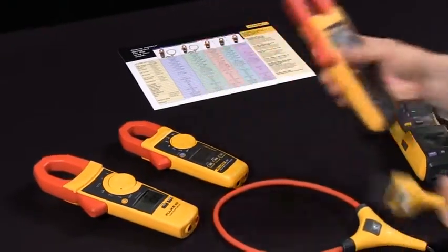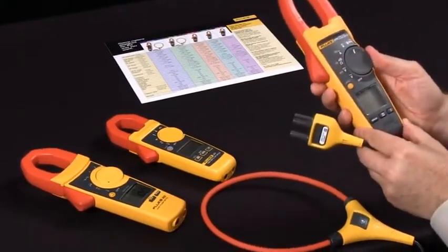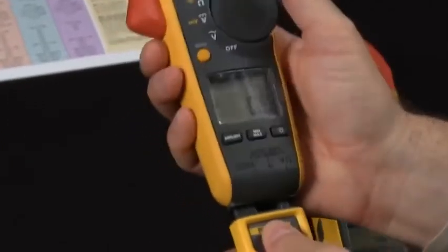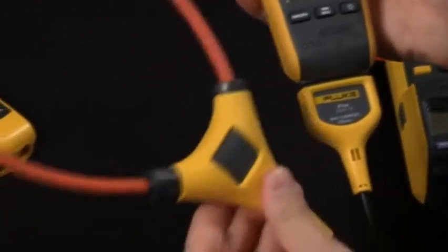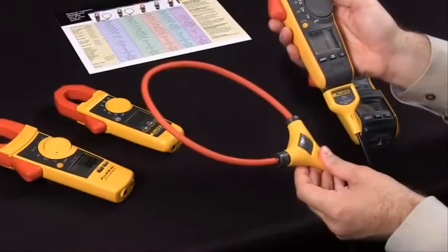Simply set the meter to IFLEX, insert into the bottom of the meter, and now you're able to measure up to 2500 amps AC with our IFLEX accessory.